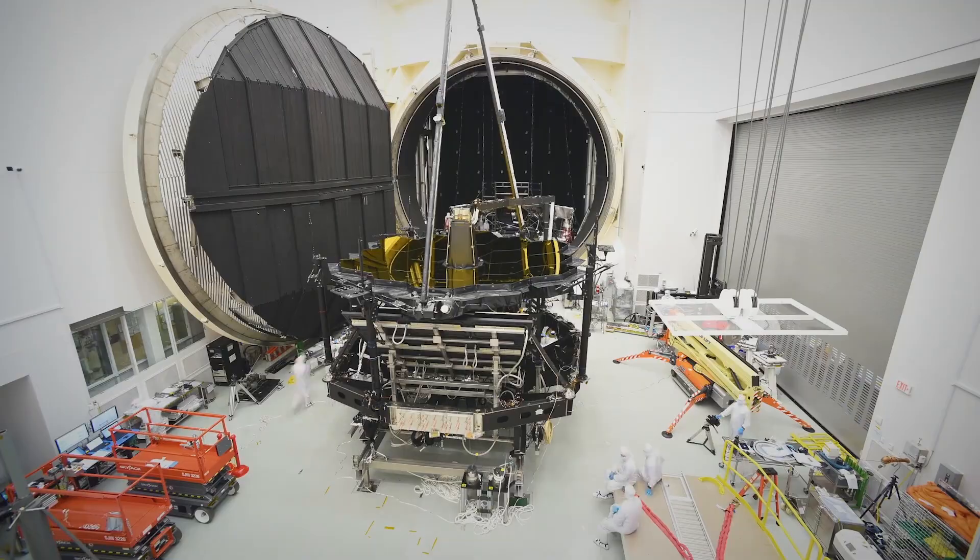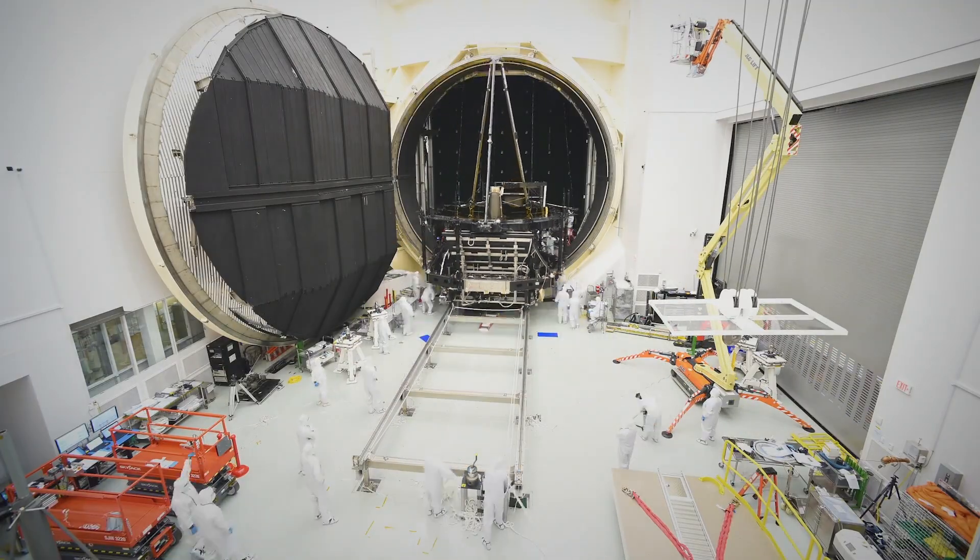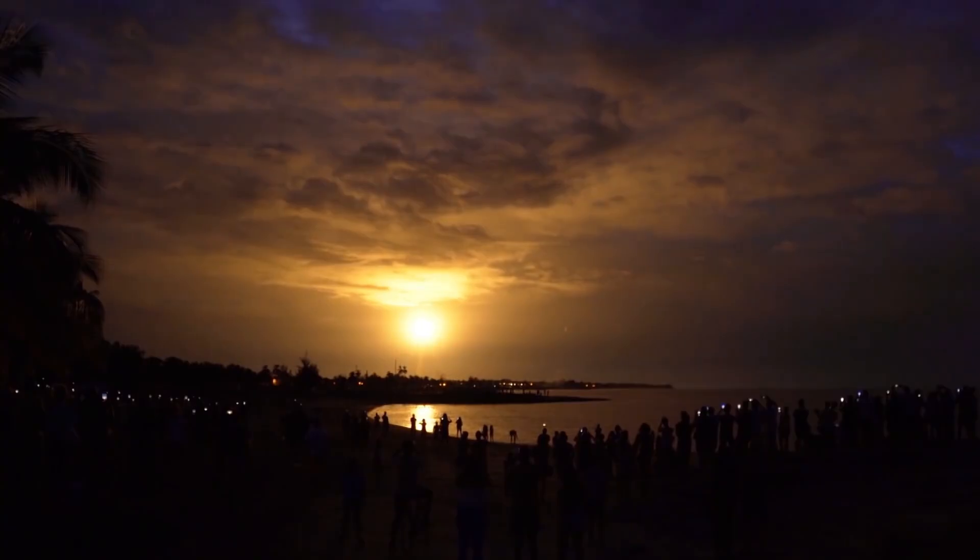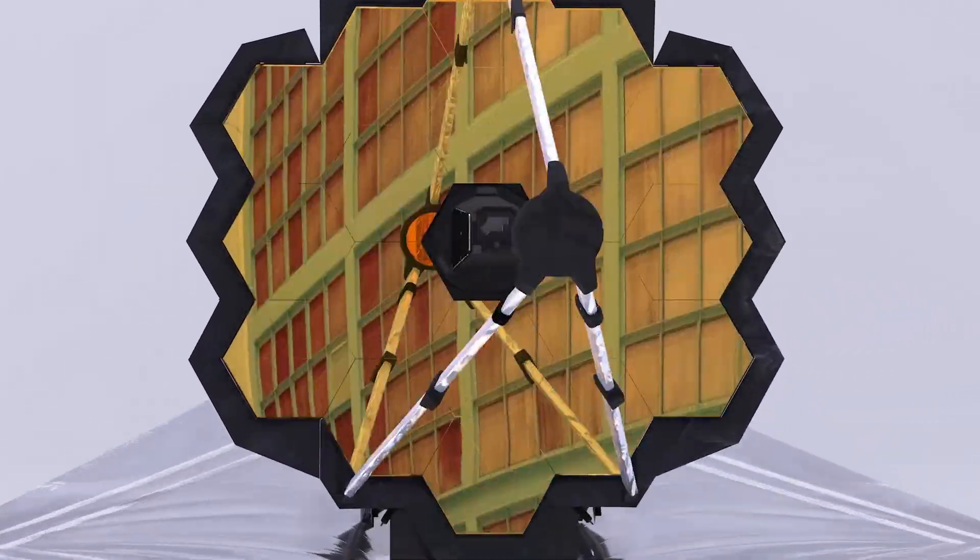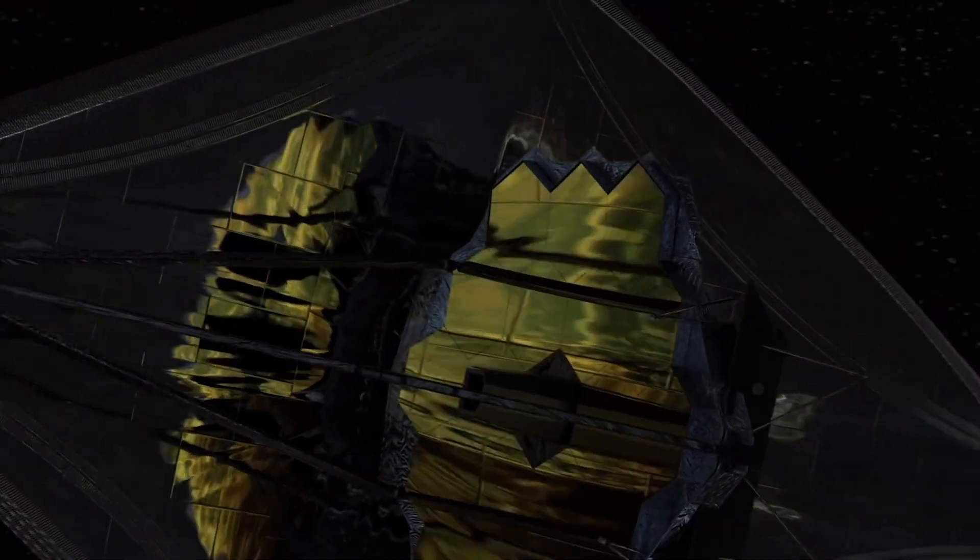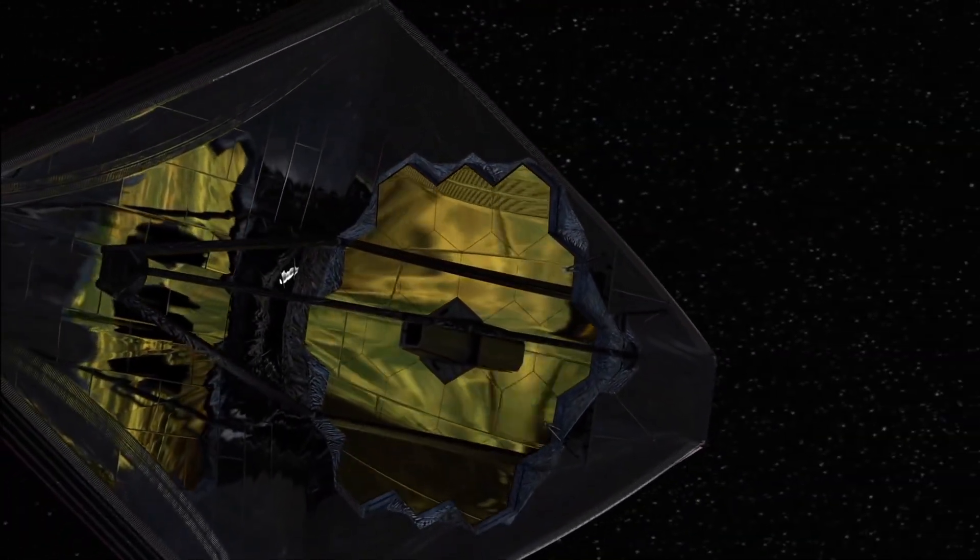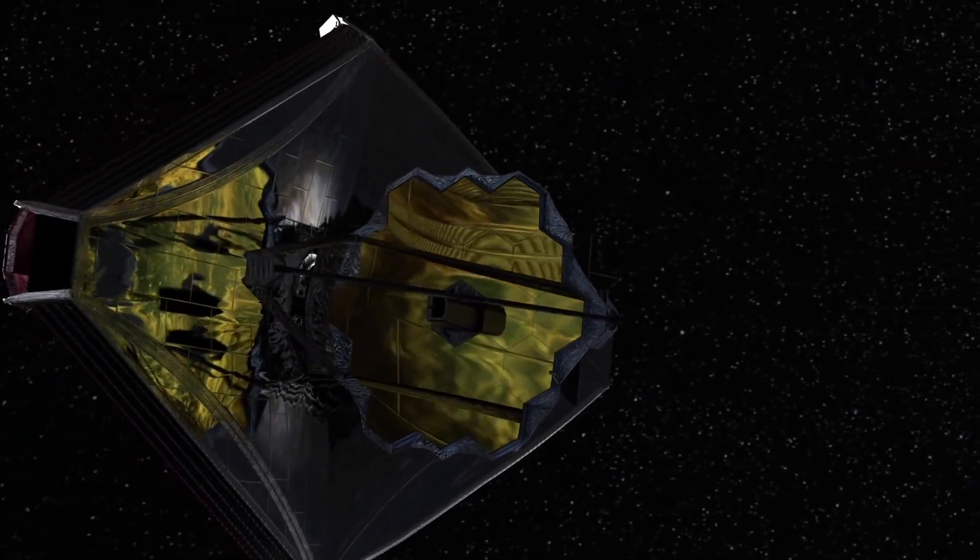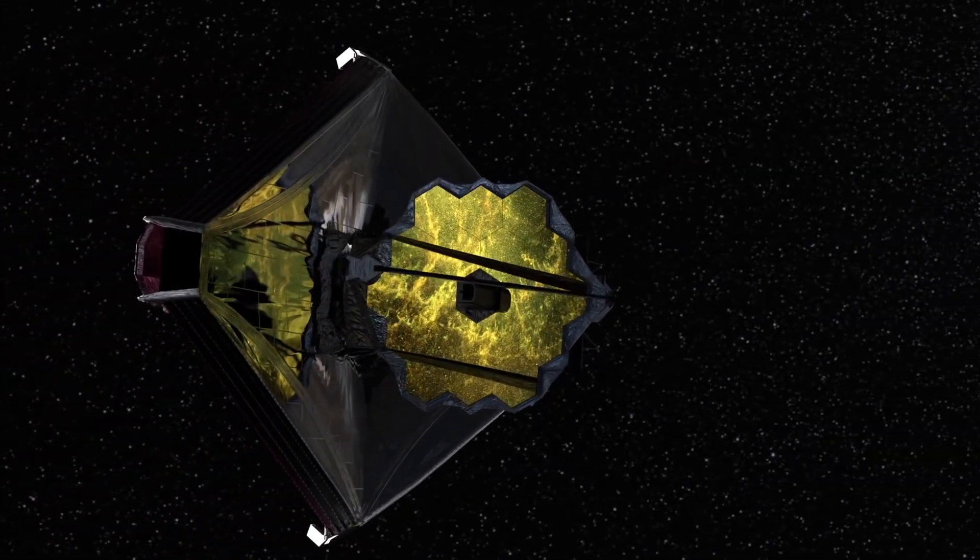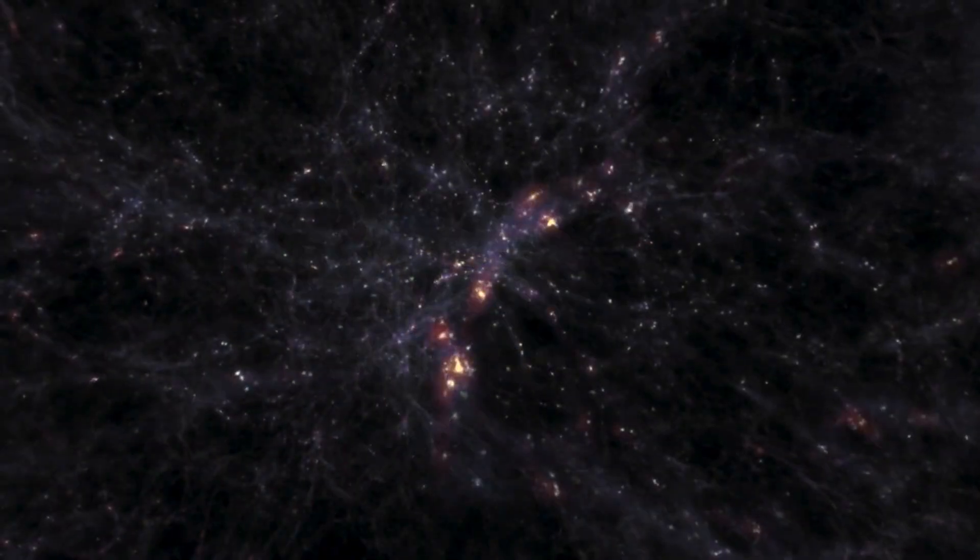Many people don't realize this telescope is way bigger than the fairing that launched it on the rocket. And so the engineers said, let's figure out how to fold the telescope, stick it in the fairing, and then unfold it a million miles out where it's parked. We were shocked for it having met the specs, because there were so many ways that could have failed, that when it met what it was designed to do, we were shocked.